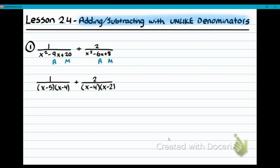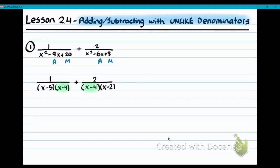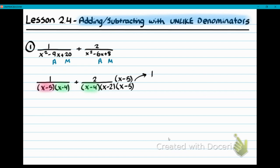Now we play our matching game — we match up which factors they have in common. If you're on your iPad, use your highlighter on Canvas. We're going to highlight X minus four and X minus four in green, since they already have that in common. We can only multiply in more factors; we can't take factors away. I see an X minus five in the first fraction, so the second fraction needs an X minus five. I'm going to multiply in an X minus five to the numerator and denominator, because X minus five over X minus five is really just the number one — we're not changing the value, just the look of the fraction.